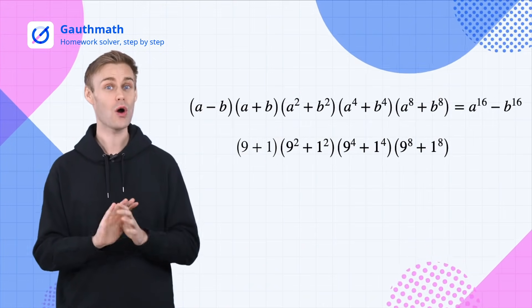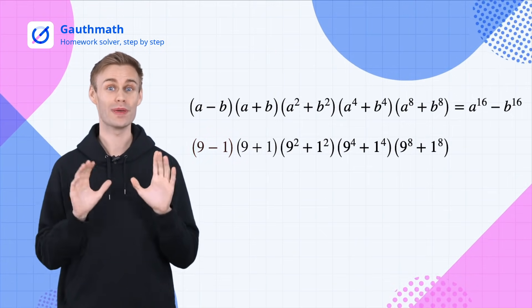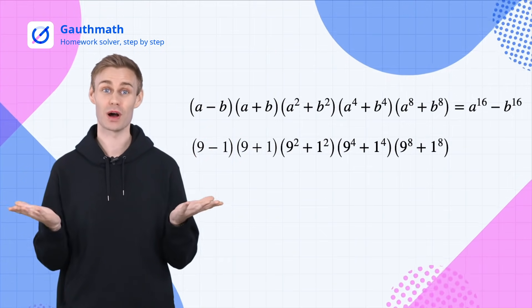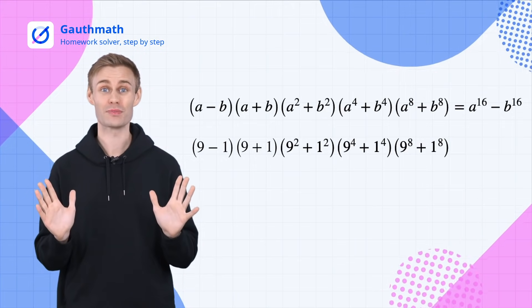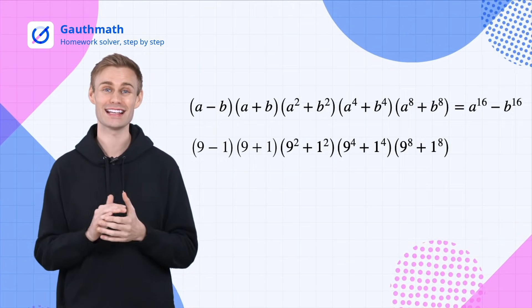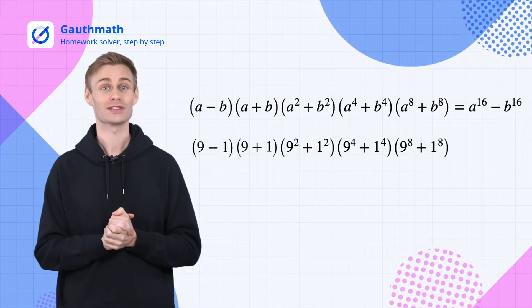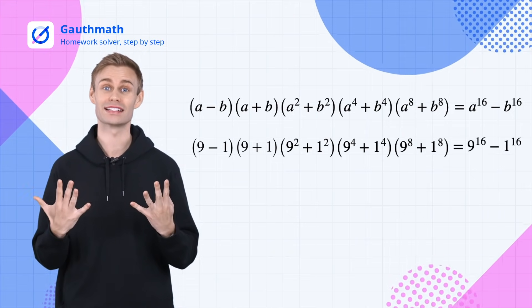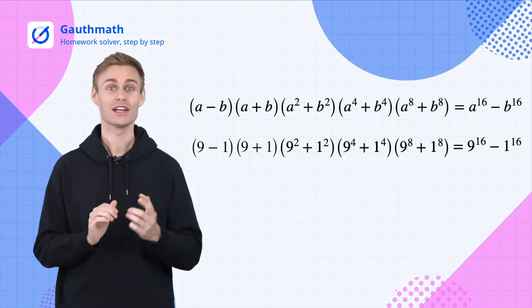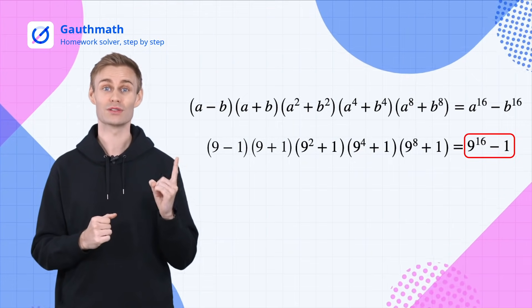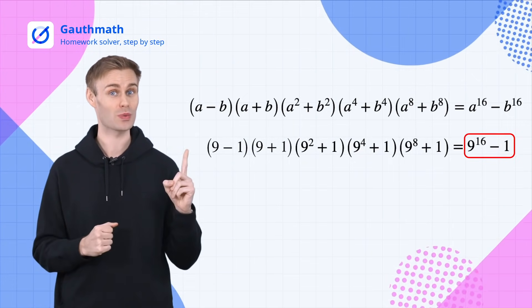If we multiply the whole expression by nine minus one it would be exactly the same as what we just worked out. We already know that the previous result is A to the sixteenth minus B to the sixteenth. So the answer here should be nine to the sixteenth minus one to the sixteenth which is nine to the sixteenth minus one since one raised to any power equals one.